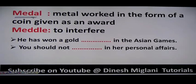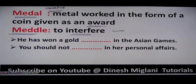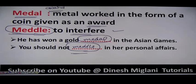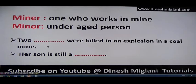Next: 'medal' and 'meddle.' Medal (M-E-D-A-L) is a coin-like award given for achievement. Meddle (M-E-D-D-L-E) means to interfere. Example: 'He has won a gold medal in the Asian Games' — using medal as an award. 'You should not meddle in her personal affair' — meaning you should not interfere. So medal is an award and meddle is to interfere.